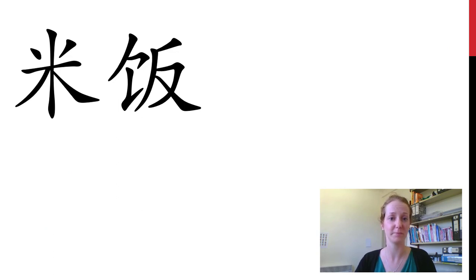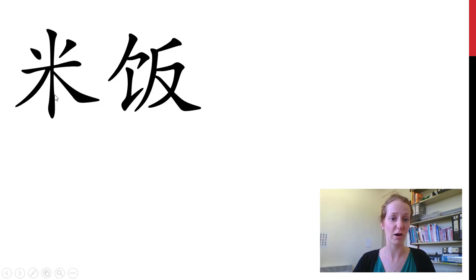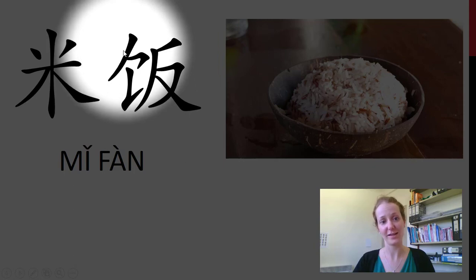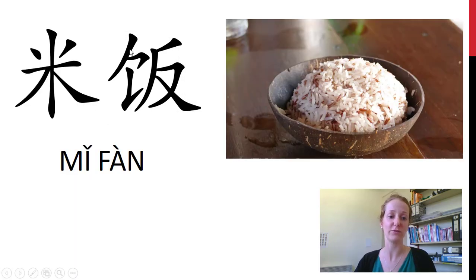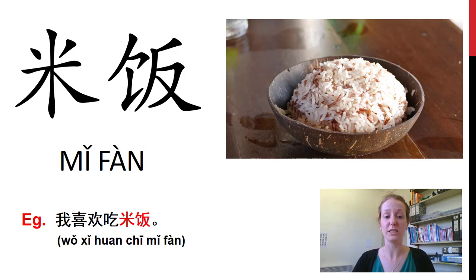Now we're going to move on to our carbohydrates. We have 米饭 — here we can see the tree radical plus a few other extra bits, and this is the character for rice. On the 饭 side, this is the food radical — recognize this swish-looking shape. So 米饭 is actually cooked rice, not raw rice. 我喜欢吃米饭. 你呢?